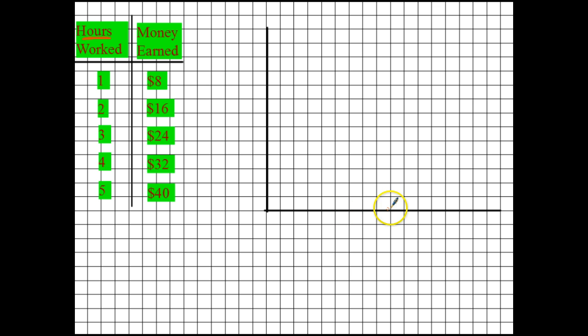Time will almost always go along the x-axis — think of a timeline, like in social studies. And money you're almost always going to have on the y-axis, because money depends on all types of other things: how many hours you work, how many jobs you do, how much stuff you sell. Also, money rises and falls — it goes up when you earn and down when you spend. So let's label this axis hours worked.